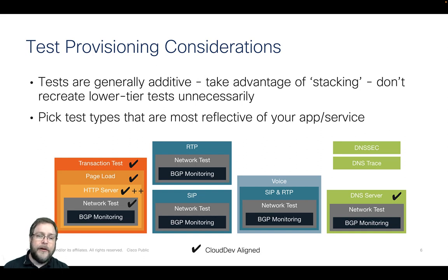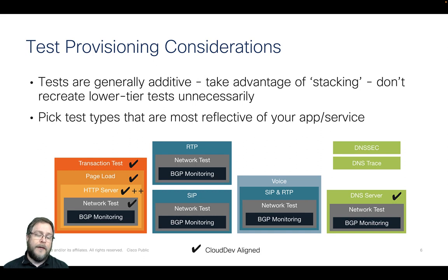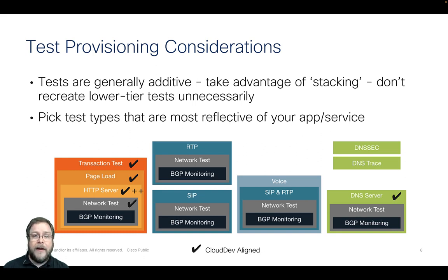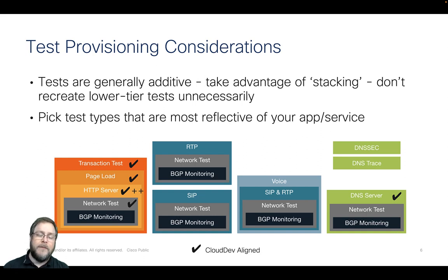When building tests, provision them in an additive form — they are stacked together, so you don't have to recreate the lower-tier tests. Ask yourself: is this an API-type test? Then use the HTTP server test, which gives you the benefit of the network test and BGP monitoring test. If you're trying to gauge an e-commerce site, then do the transaction test, which gives you transaction, page load, HTTP server, network, and BGP tests.